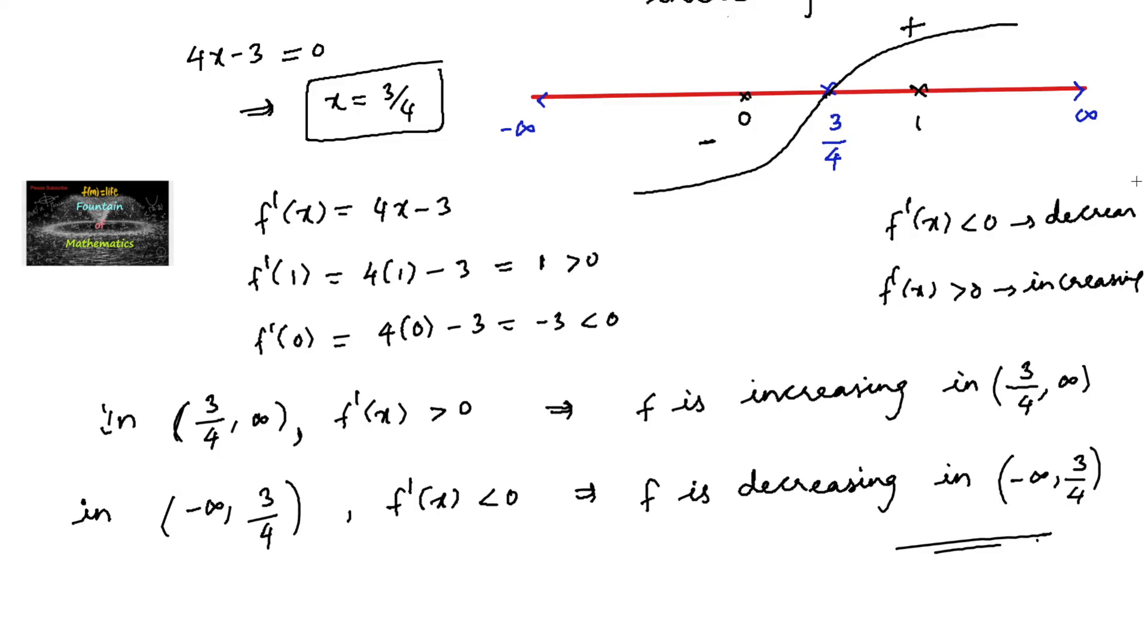By using the wavy curve method, simply taking the curve from the negative side, at this point changing the curve, we can easily identify the positive and negative regions. The wavy curve method is explained in a video linked in the description box. Please watch that video for good knowledge. Thank you.